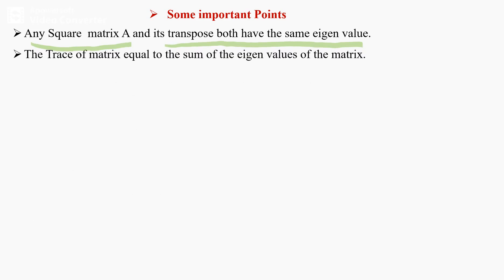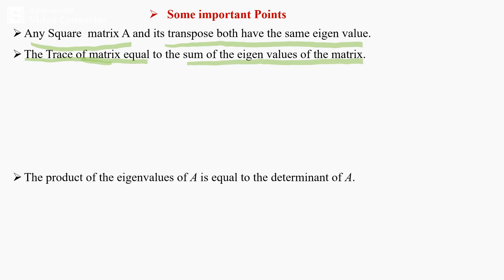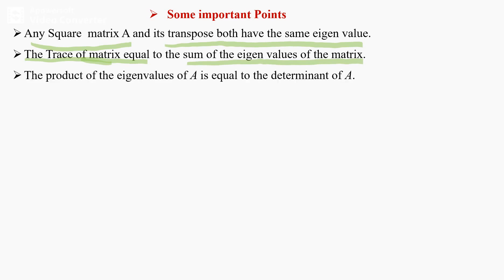The trace of the matrix is equal to the sum of the eigenvalues of the matrix. The trace of the matrix is the sum of the principal diagonal elements of the matrix.